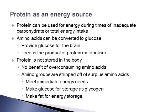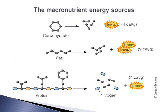Protein is not stored in the body, so there's no benefit to over-consuming amino acids — you won't build up a storage reserve. If you don't have enough carbohydrate, your amino acids will be used immediately to provide glucose or energy instead of fulfilling their other important roles, such as providing structural components, blood clotting, or repairing tissue. The amino groups will be stripped from surplus amino acids to meet immediate energy needs, make glucose for glycogen storage, or make fat for energy storage.